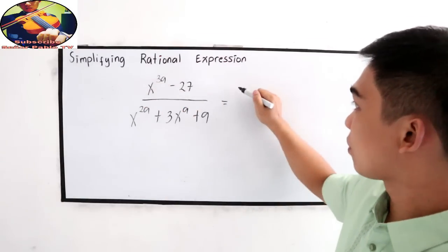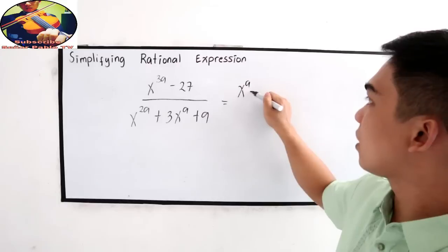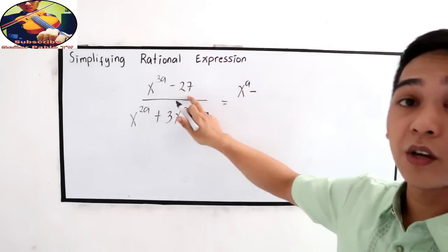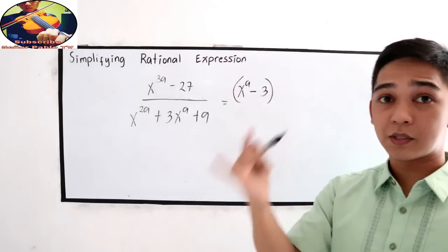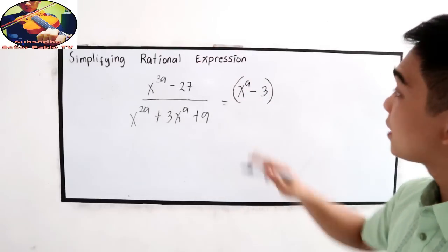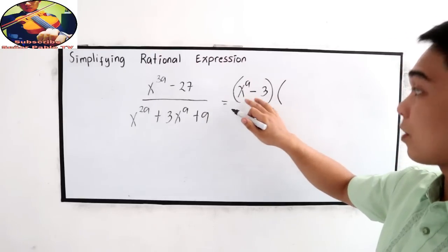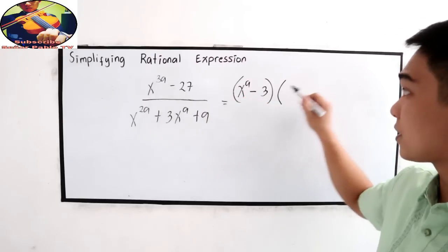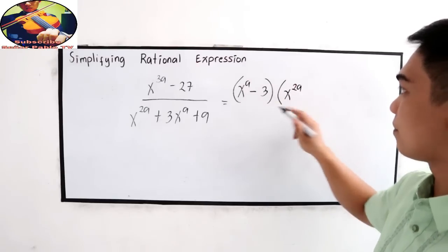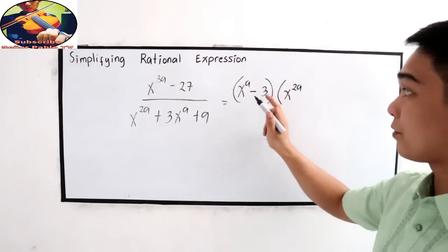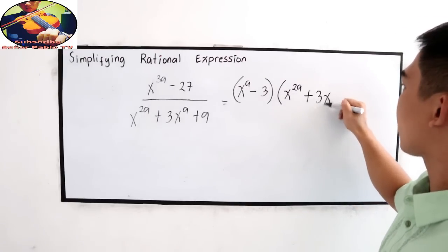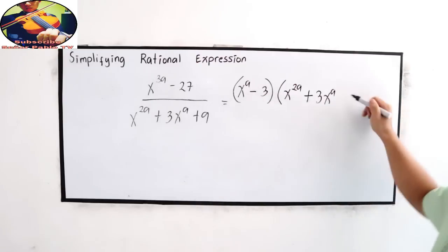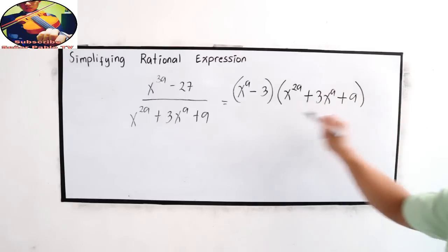Again, cube root so we have x raised to a minus the sign, cube root of 27 is 3. 3 times 3 times 3 is 27. Now, focus on the second term. On our trinomial, square the first term that will become 2a because we need to square. Multiply the first and the second, change sign to positive 3x raised to a, then square the second, positive 9.